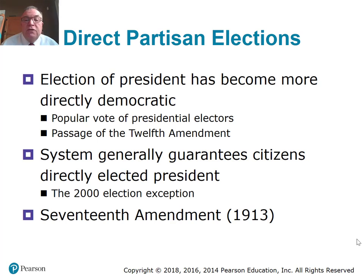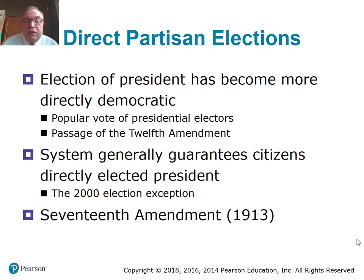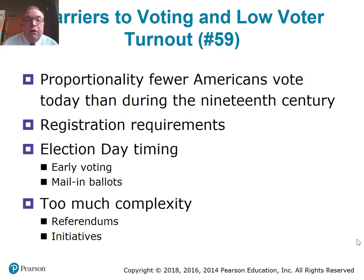With direct partisan elections, we elect the president by popular vote. The 12th Amendment, done after the election of 1800, and systems generally guarantee a directly elected president, but there have been multiple times — most recently 2016 — where the person who got the most votes didn't necessarily win the election. The 17th Amendment in 1913 permitted the direct election of U.S. senators rather than being chosen by state legislatures. Some barriers to low voter turnout: question 59 asks what are the most and least important factors for turnout.